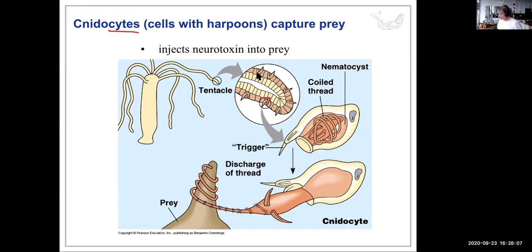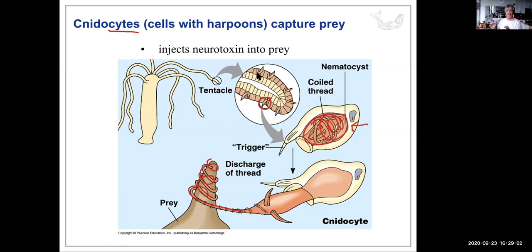Within the cnidocyte is an organelle called a nematocyst, which contains a coil that unwinds and stings prey. The release speed is phenomenal — possibly one trillionth of a second, though that's anecdotal. It works by osmosis: the environment changes, water rushes into the cell, and that pressure pushes out the nematocyst.